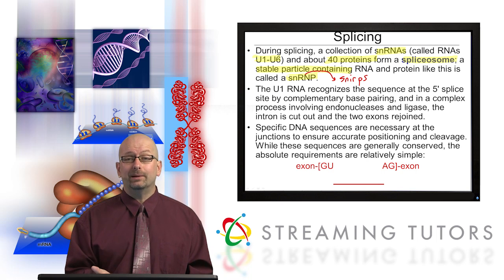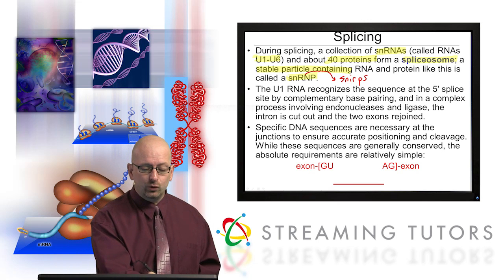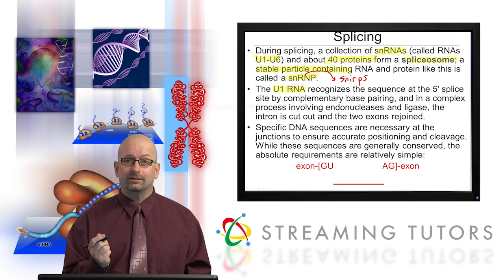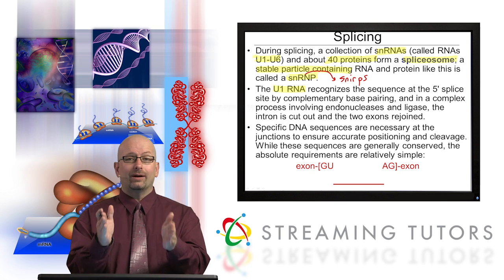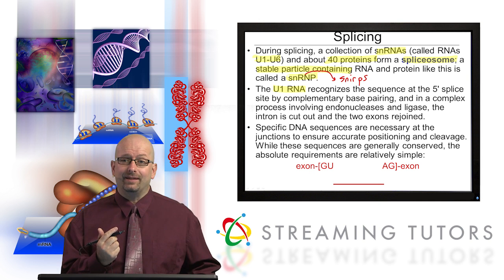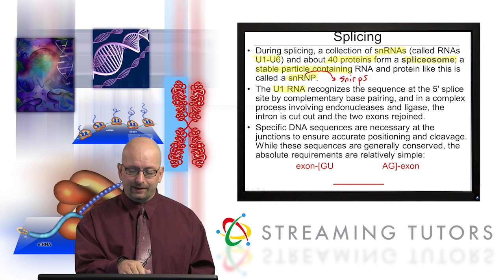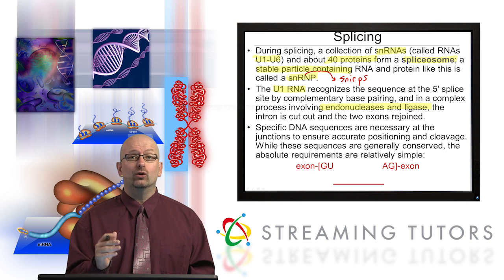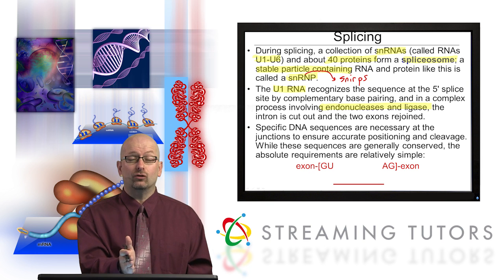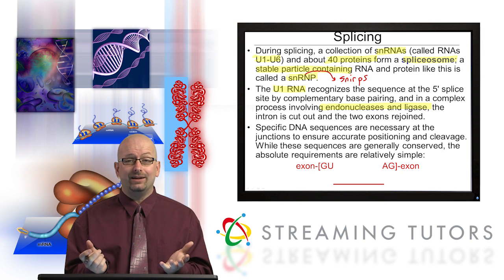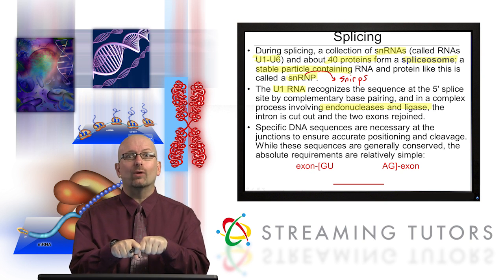Depending on your class, you may go very deeply into the splicing machinery or not so much. The U1 RNA is very important in recognizing a base sequence by base pairing at the 5' splice site. The intron has a 5' and 3' end — we have to cut it at both ends and get it out. You're going to need an endonuclease to cut the RNA internally, and then a ligase to join the two pieces of the relevant exons together.